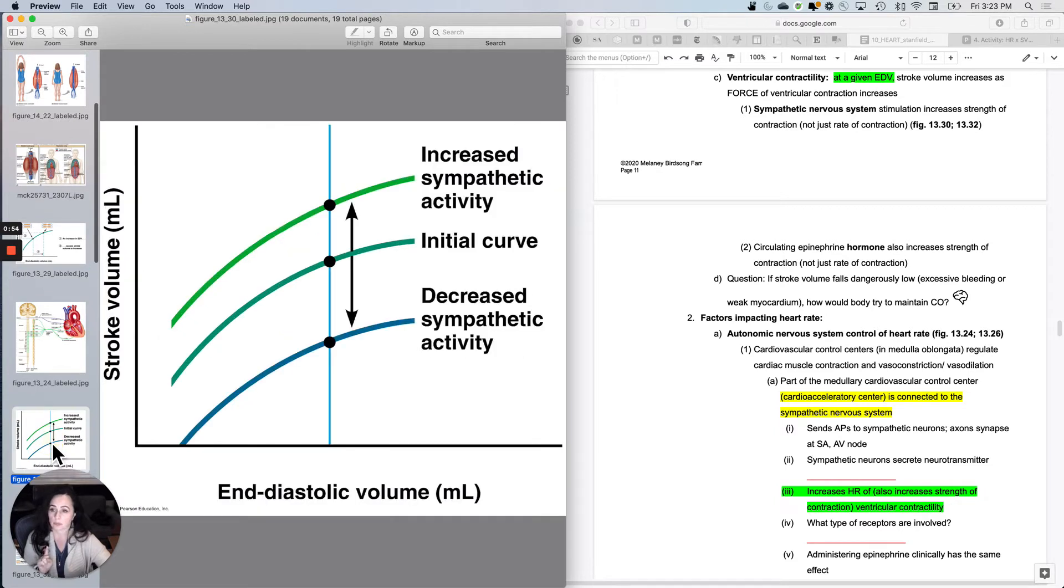But with ventricular contractility, you hold the volume constant and you impact the stroke volume out without changing the amount in. It's just by basically squeezing harder, but squeezing harder with the amount that's in there staying stable.